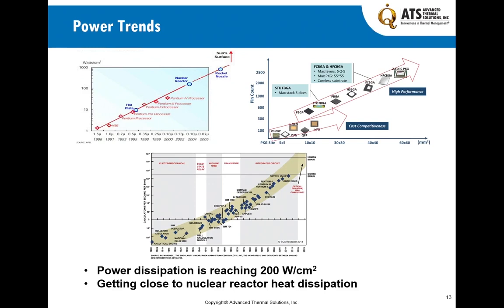The power trend is well-established. I've put some examples from the early 2000s showing the trends going up. The market is very varied in comparison to the past when CPUs and GPUs were the main drivers. Now we see a spectrum across 16 different market sectors of electronics packaging, the demand is very high, packaging is getting more complex, frequency is going up, and power dissipation is under rapid rise. At ATS, many of our customers are challenged between 150 to 300 watts per centimeter squared that they need cooling solutions for.